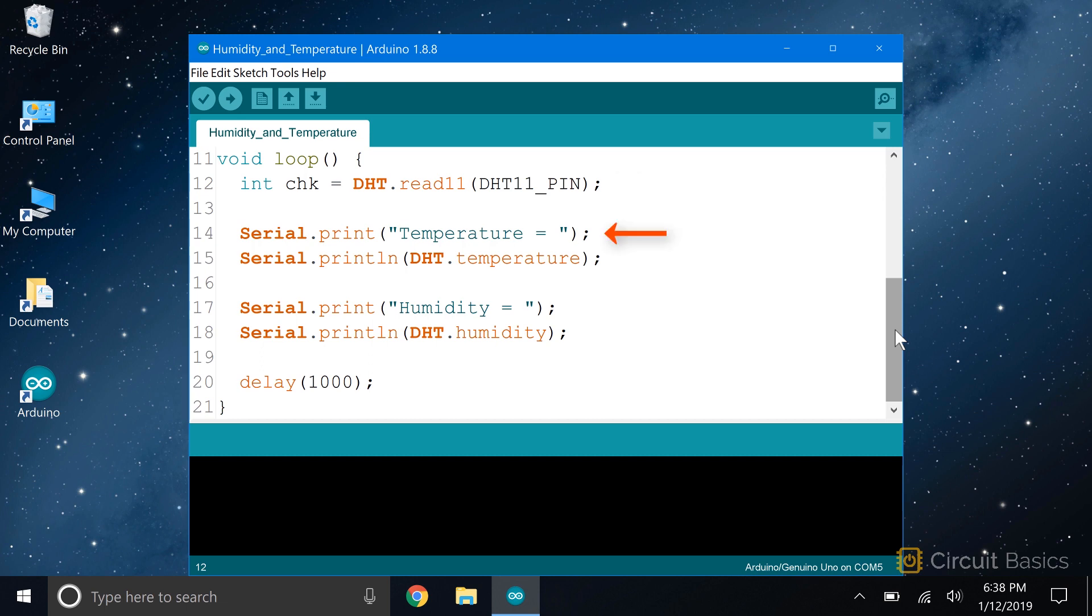Now to print the temperature, I'm going to serial print some text that says temperature. Then I'm going to serial print DHT.temperature. DHT.temperature holds the temperature measurement. Temperature is a public variable that's declared inside the DHT class. We can access it with the DHT object we created. Accessing public variables from a class is similar to accessing functions from a class. We just write the name of the object. In this case, it's DHT. Then we write a period, followed by the name of the public variable. DHT11 outputs temperature in Celsius, but if we want Fahrenheit, you can use DHT.temperature as a variable in the conversion equation.